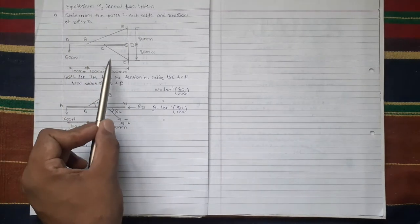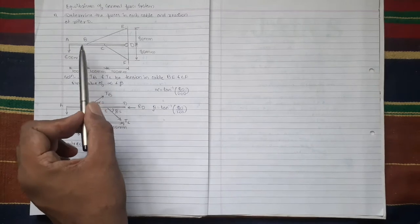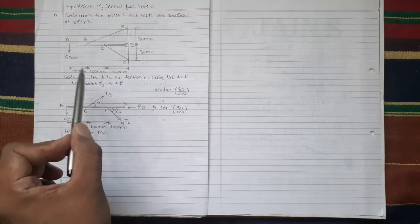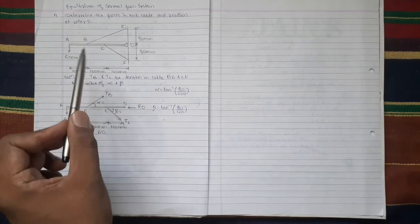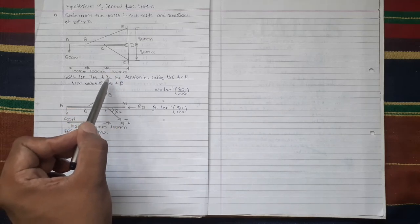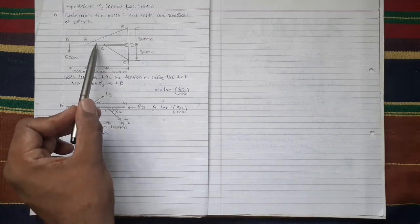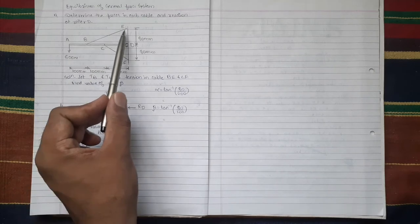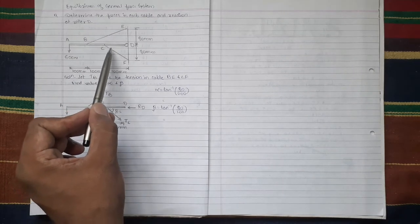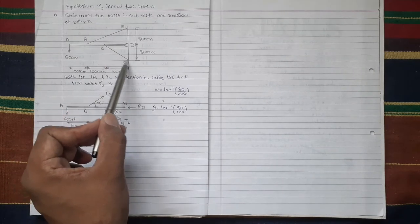In this figure, in cable BE the tension force is TB, in cable CF tension force is TC. Alpha is the angle made by cable BE with the horizontal, beta is the angle made by CF with the horizontal.